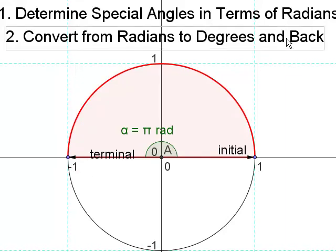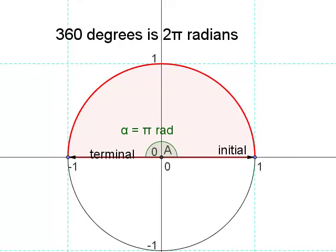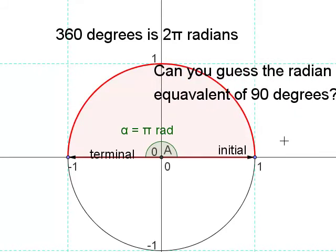So there are two pieces of information to help you. 360 degrees is 2 pi radians, 180 degrees is pi radians, and I'm going to leave it to you. Can you guess the radian equivalent of 90 degrees? And then can you find the radian equivalent of all of our other special angles?